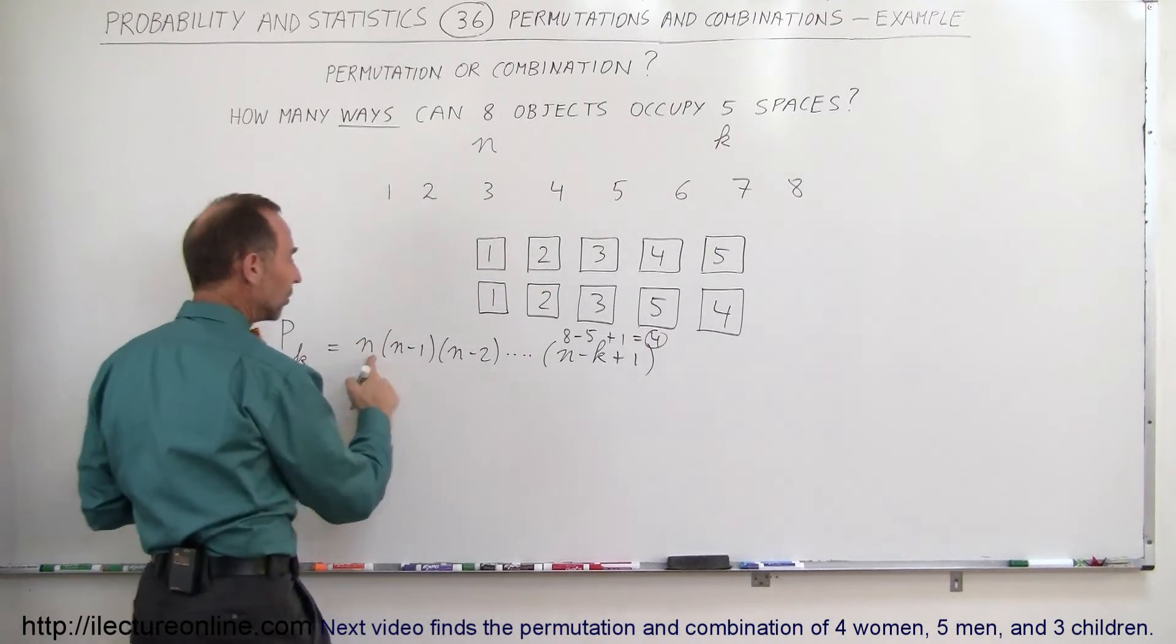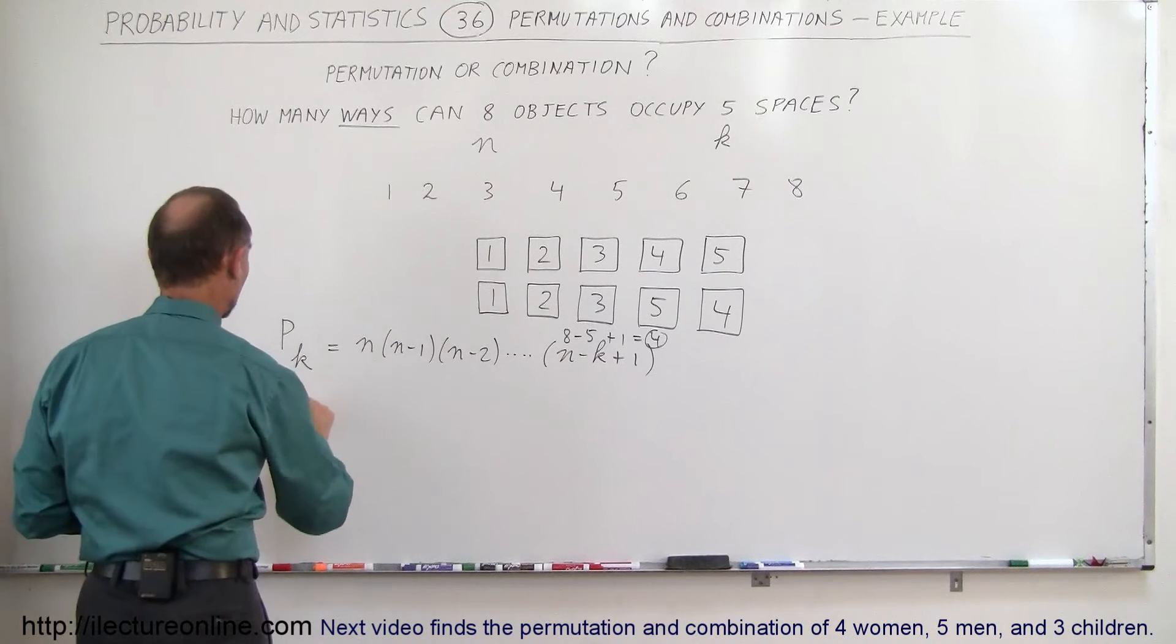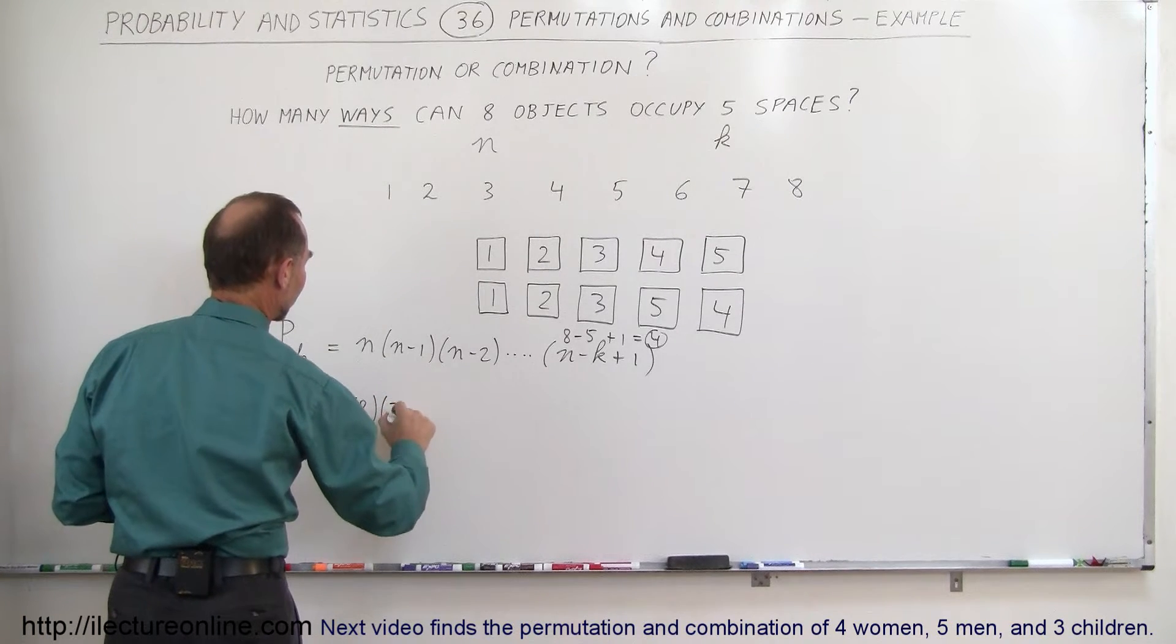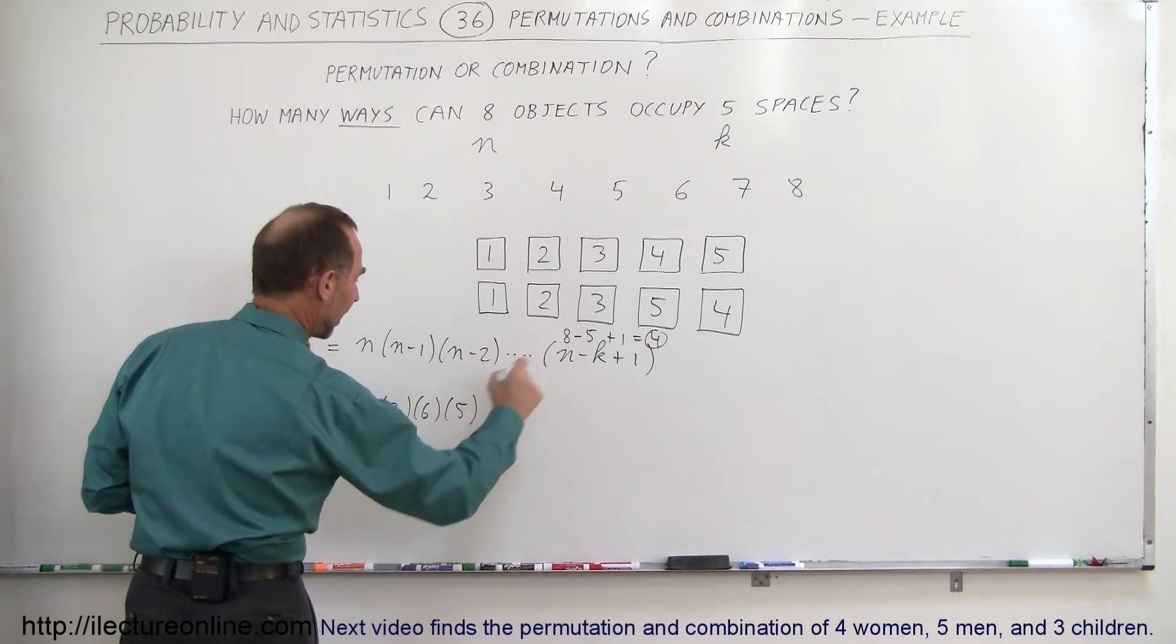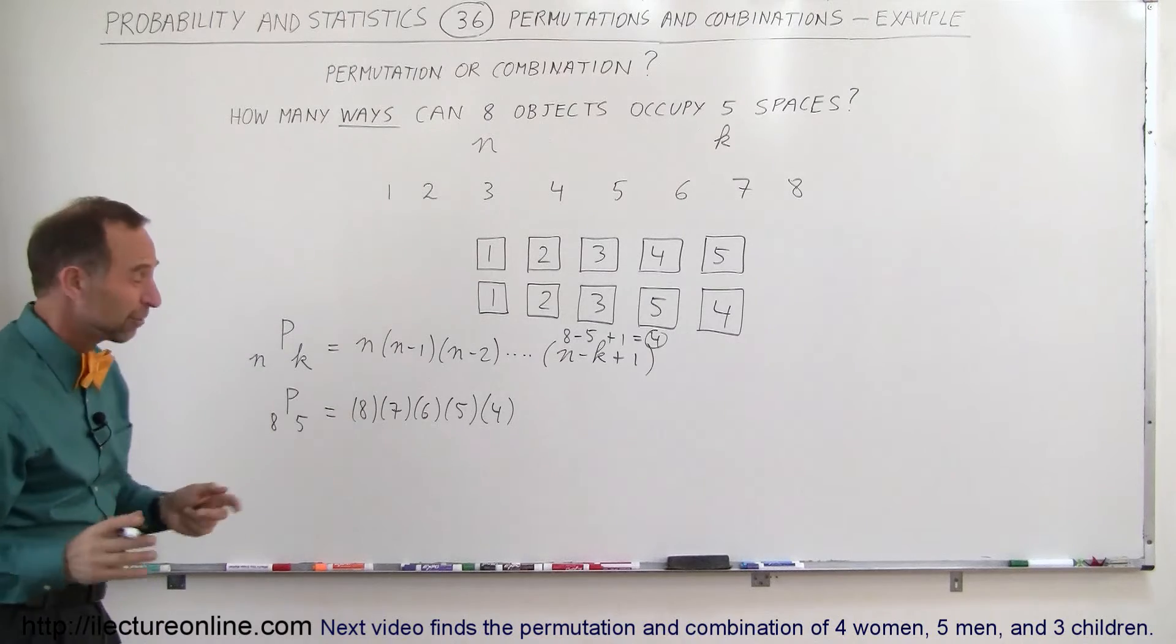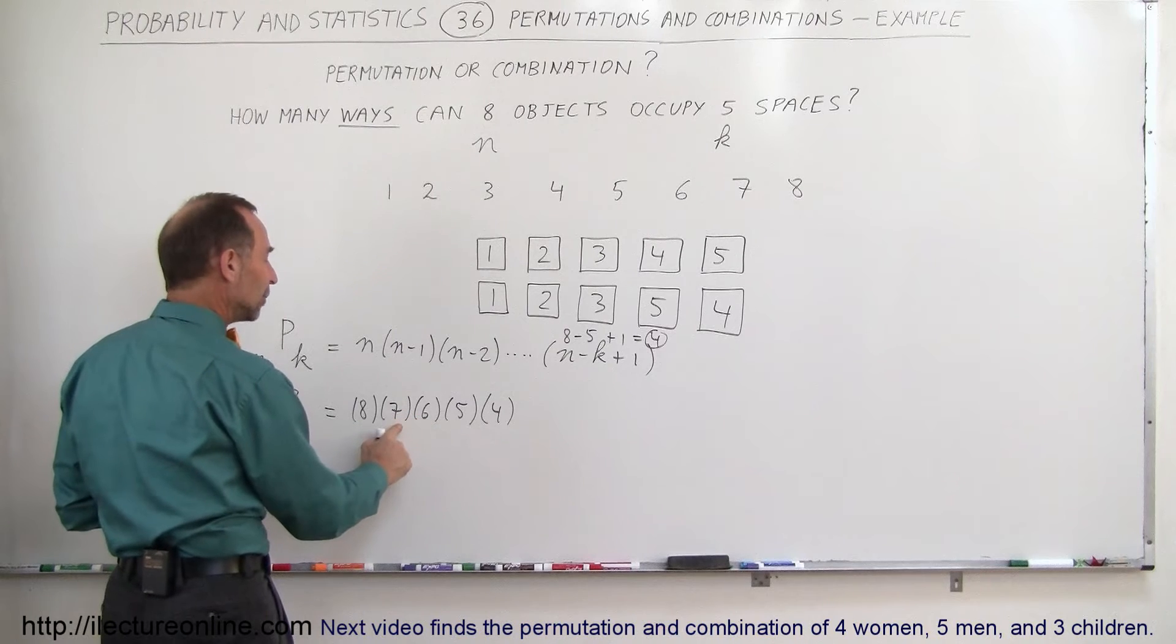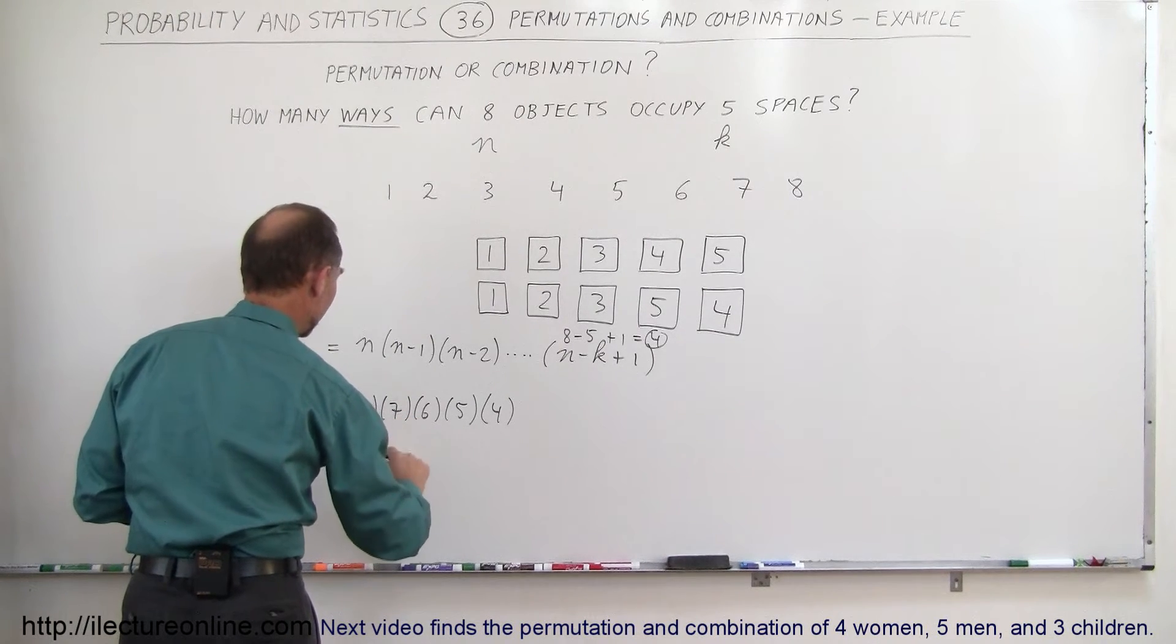So we go down from 8 down to 4, multiplying the numbers together, which means that the number of permutations with 8 objects and 5 spaces is equal to 8 times 7 times 6 times 5 times 4, all the way down to this quantity. Now we have to multiply these together. 5 times 4 is 20, times 6 is 120, times 7 would be 840, so now we end up with 8 times 840.